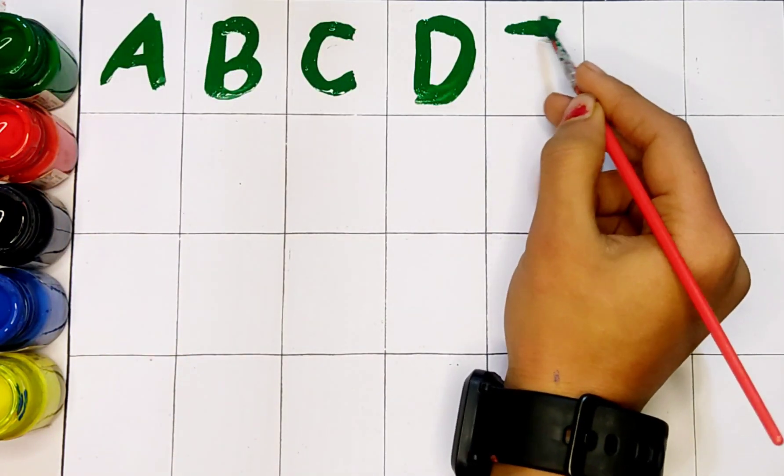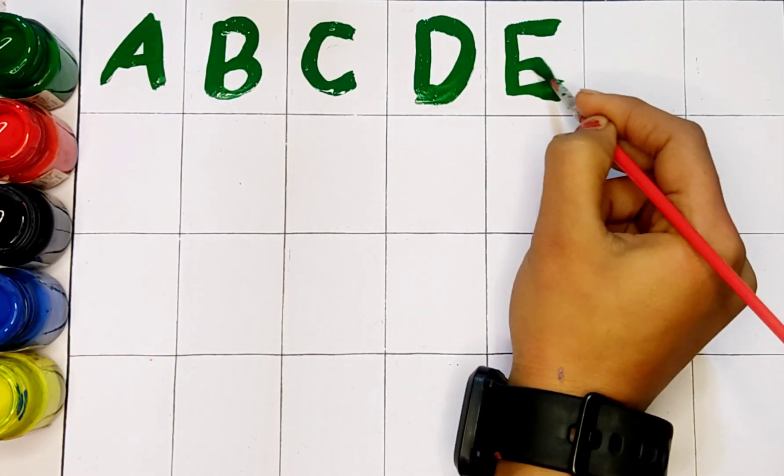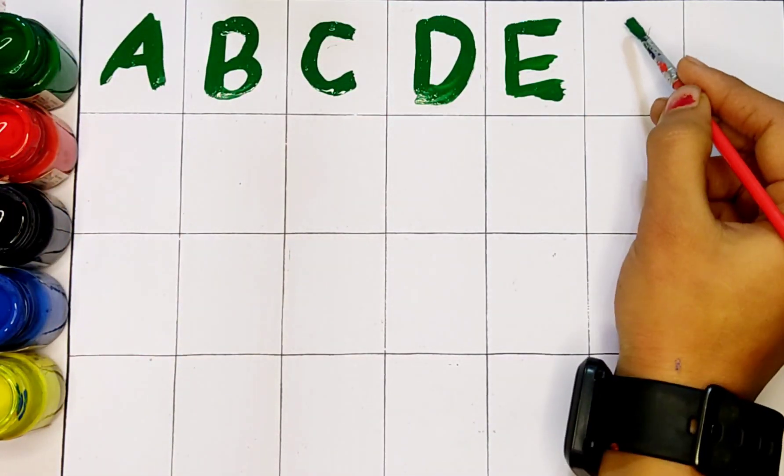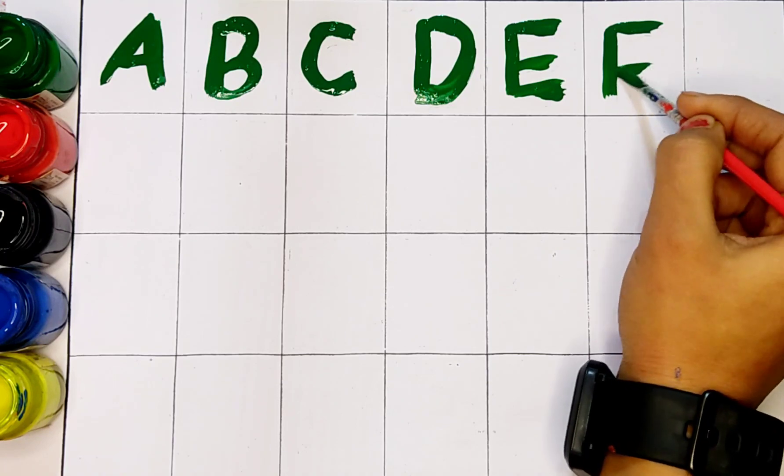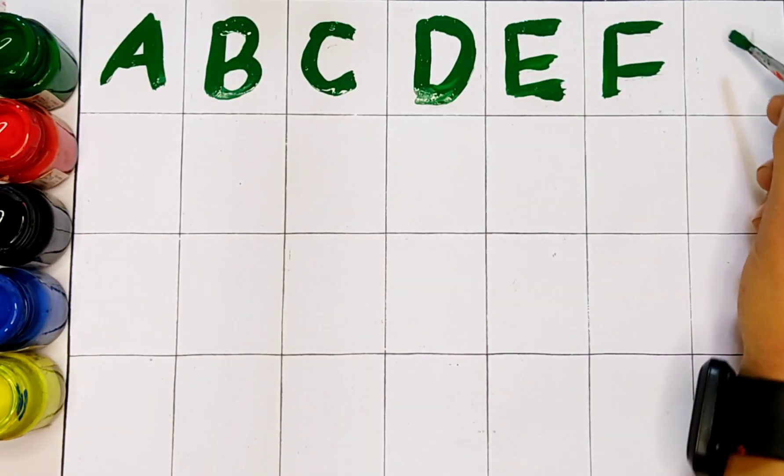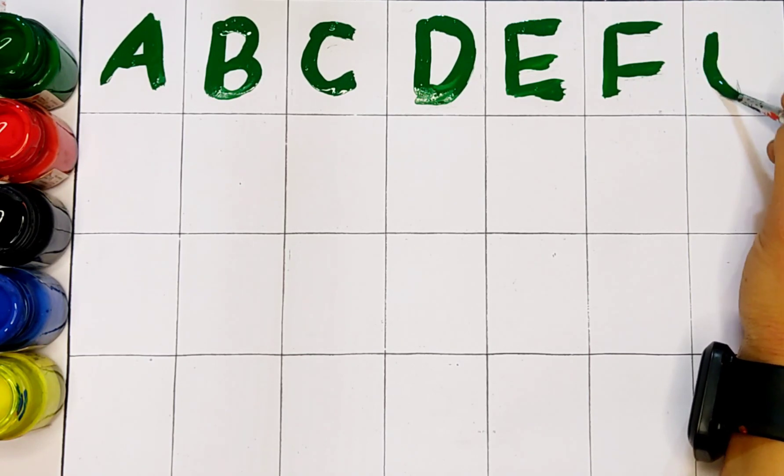E. E for elephant. F. F for fish. G. G for girl.